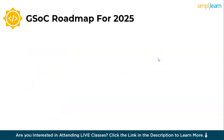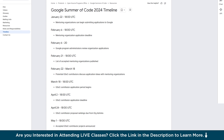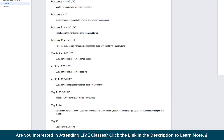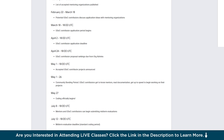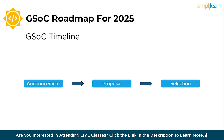Now let's proceed with how to participate in GSOC and the important timelines to focus on. Participating in GSOC involves selecting an open-source organization, preparing a project proposal, and collaborating with mentors if selected. Start by exploring the list of participating organizations on the GSOC website. Identify projects that match your skills and communicate with mentors to refine your ideas. Submitting a strong proposal is the key to showcasing your ability to contribute effectively. The important timelines to focus on are: announcement of organizations, proposal submission, and selection.